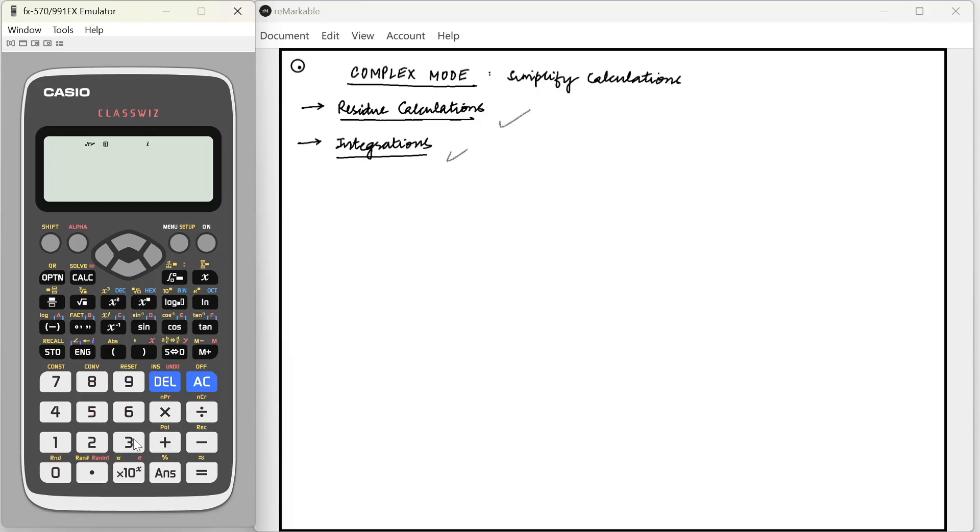This is very useful in residue calculations in complex integrations and all that. To give you an example, suppose we have to calculate one plus i square in some calculation. Now instead of doing it by hand and making silly mistakes, we can just write i plus one whole square and that will give us the answer.